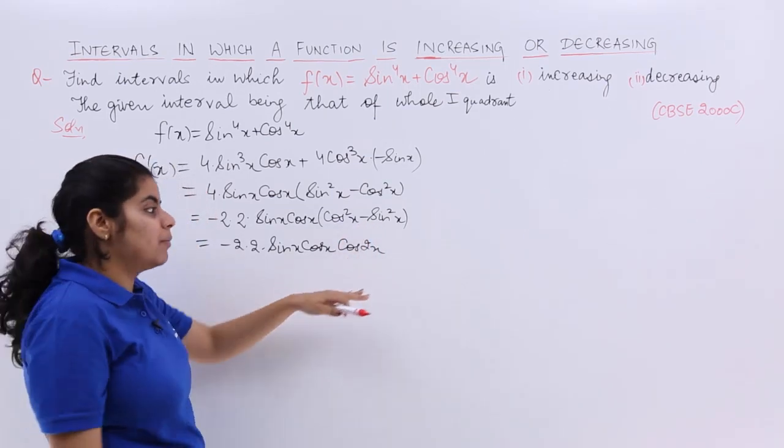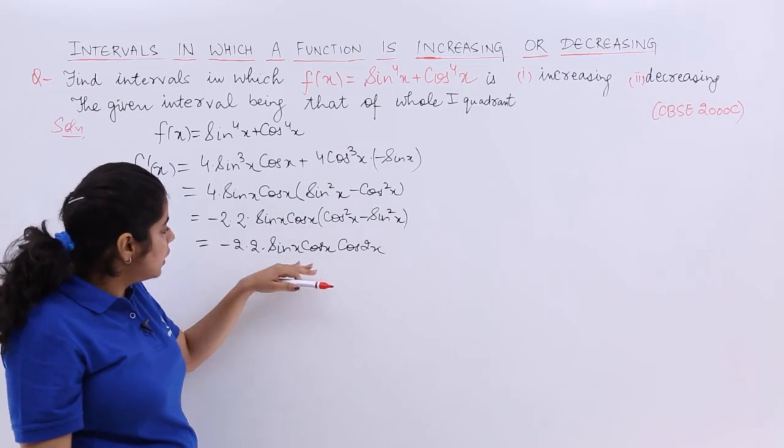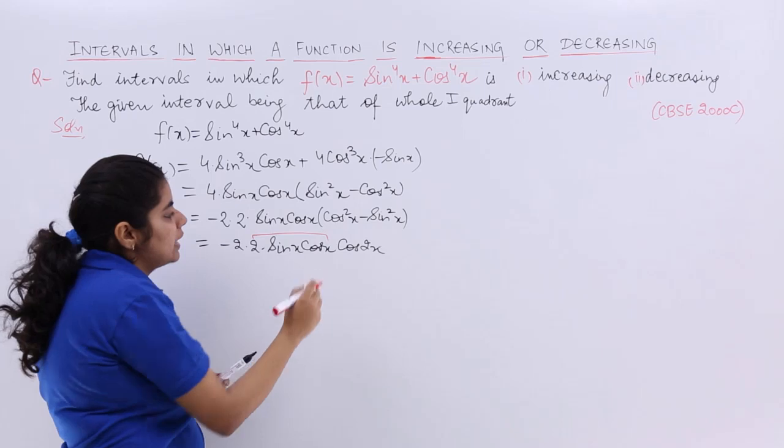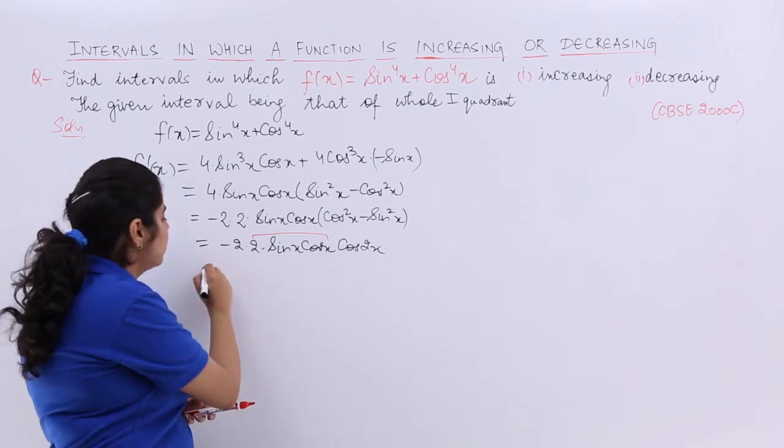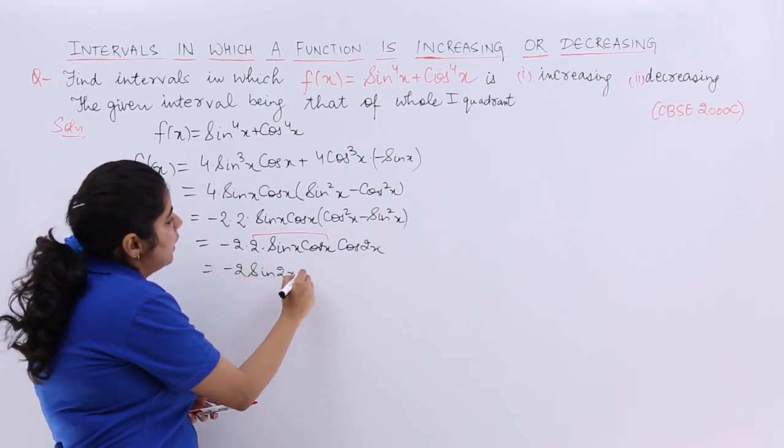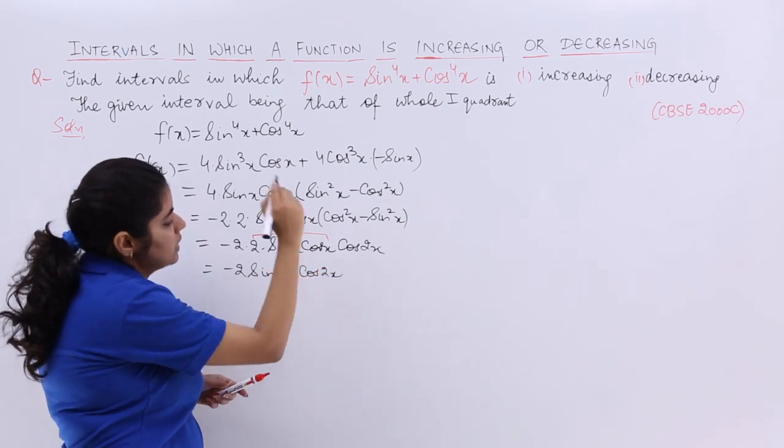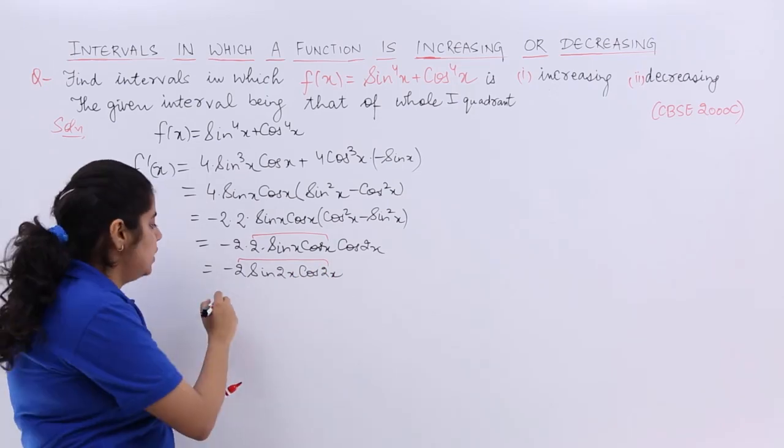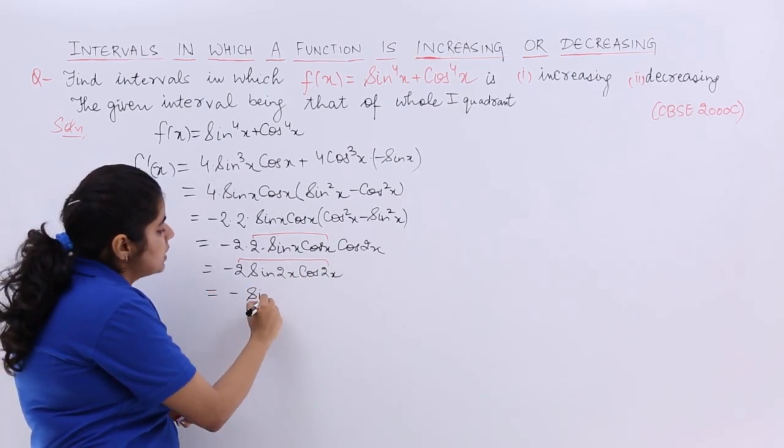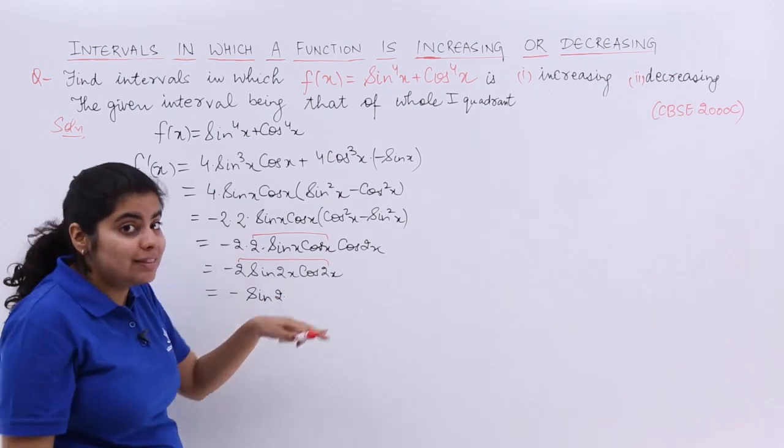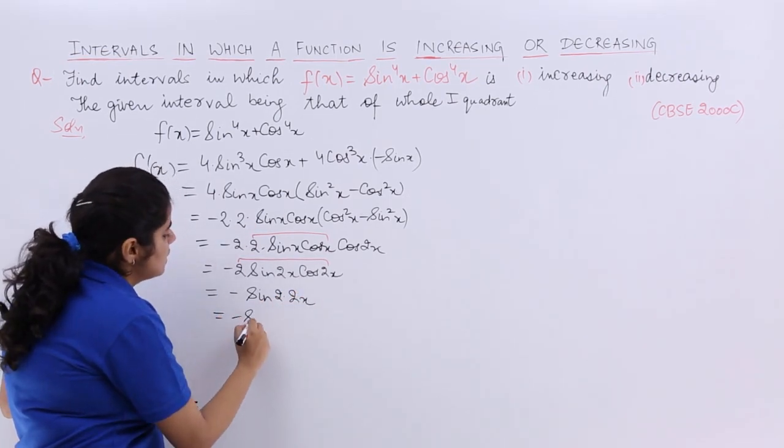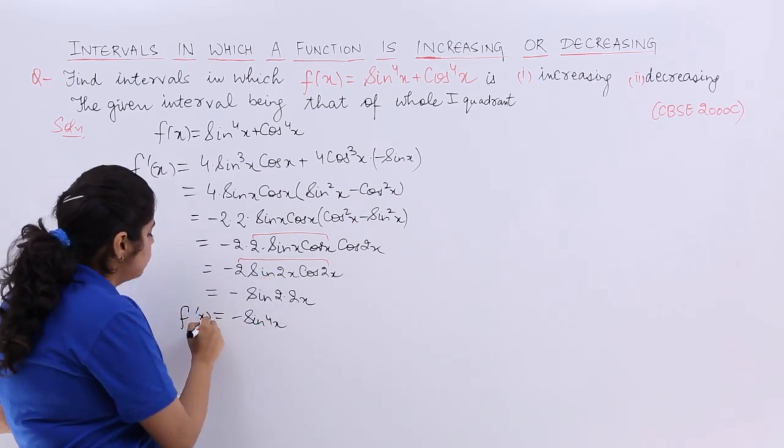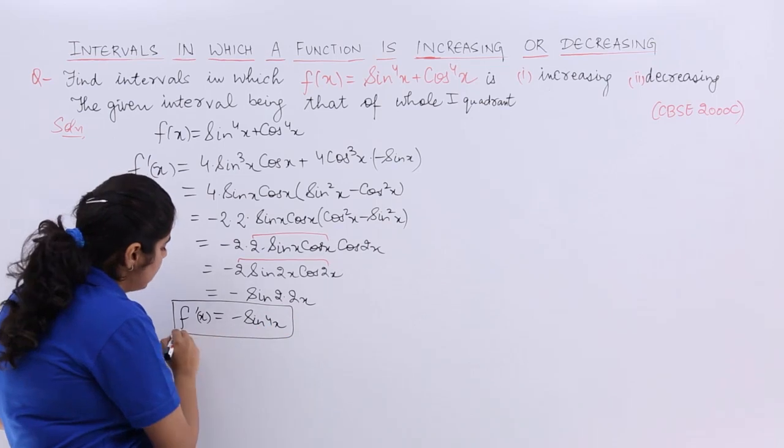Now if I can get 2x here, that will be wonderful. What is the formula of 2sin(x)cos(x)? Sin(2x). So it's -2sin(2x)cos(2x). Now again, 2sin(θ)cos(θ) = sin(2θ). So it's -sin(4x). Once for all, I'll write what formulas I used after finding f'(x).